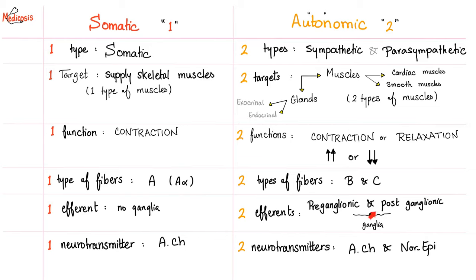Why ganglia? It's a relay station for regulation and a distribution center, so that one preganglionic vagus can supply the fundus of the stomach, the body of the stomach, the antrum, and the duodenum. For your hands, you don't need this distribution — you need a fiber for every single sophisticated movement coming down from the spinal cord as is. Somatic has one neurotransmitter: acetylcholine. Autonomic has two: if I am a parasympathetic postganglionic fiber, I secrete acetylcholine; if I am a sympathetic postganglionic, I secrete norepinephrine — with the tiny exception of sweat glands, which are postganglionic sympathetic but secrete acetylcholine.